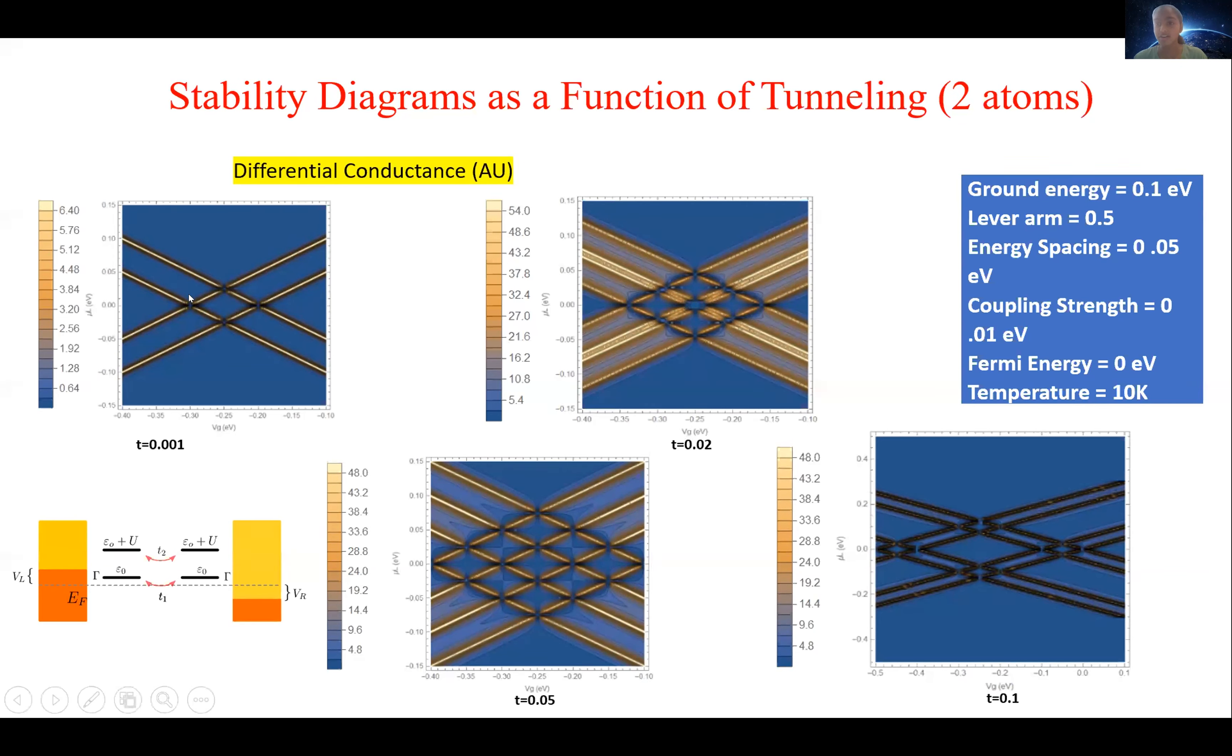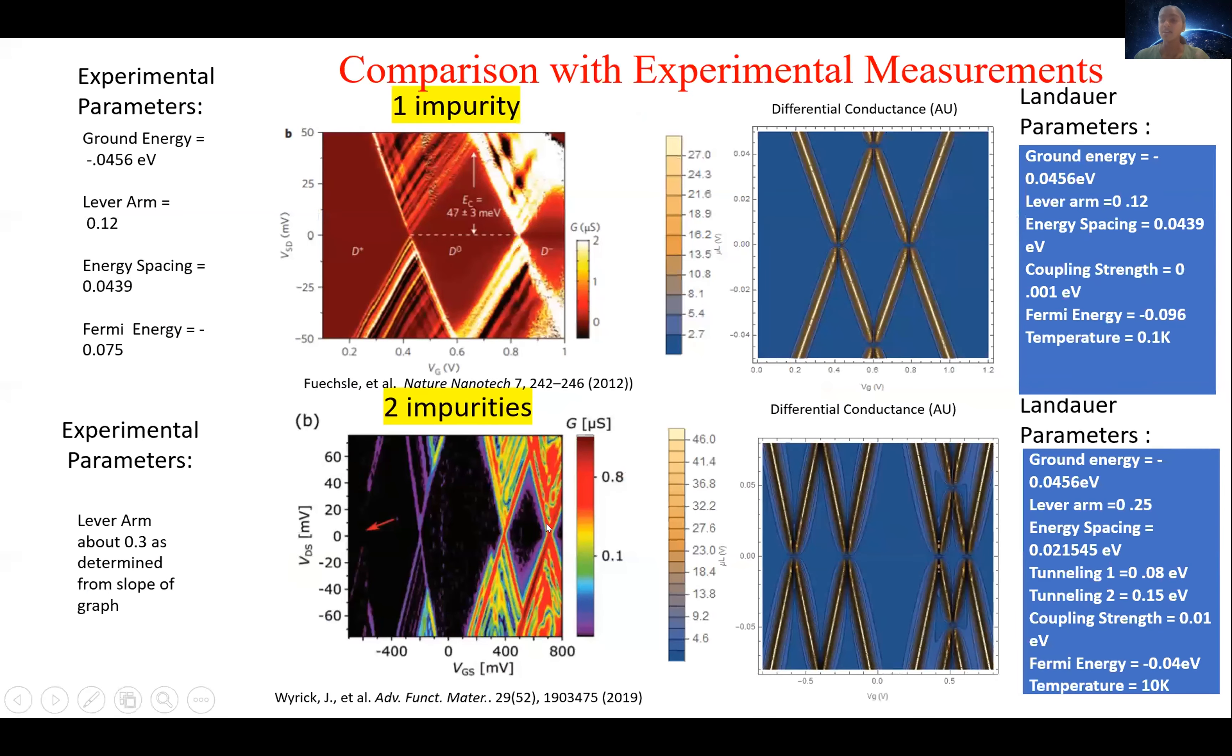So here we see with low tunneling, this profile resembles a one impurity system. As we increase tunneling, we're able to manipulate the size of these diamond regions. So with this understanding of how the model parameter space affects the diamond profile, we try to replicate experimental figures.